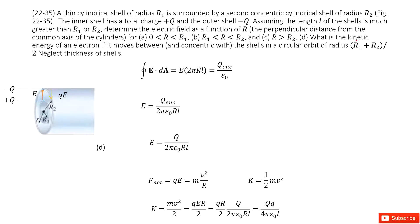Part D asks for the kinetic energy of an electron moving in circular motion between the shells. The electric field in that region points from the positive charge to the negative charge — radially outward. The electron carries a negative charge, so the electric force acts in the opposite direction, pointing toward the center of the circle. This centripetal electric force enables the electron to undergo circular motion.